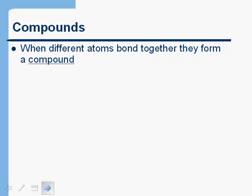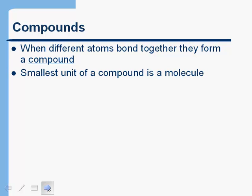I wanted to talk briefly about compounds. We're certainly not going to get into the chemistry of how atoms bind together to form molecules. But I want to just talk about it briefly. When different atoms bond together, they form a compound as opposed to an element, which is just one type of atoms. And the smallest unit of a compound is a molecule.